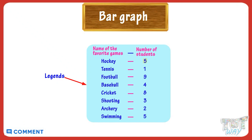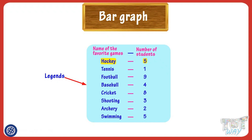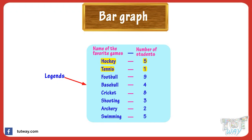Five students like hockey the most — that is, the favorite game of five students is hockey. The favorite game of one student is tennis, and the favorite game of nine students is football, and so on.